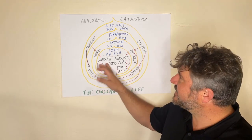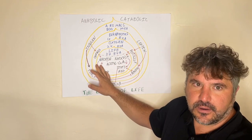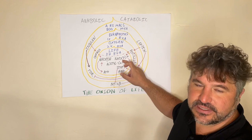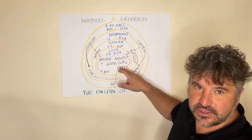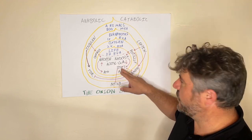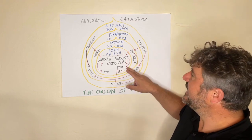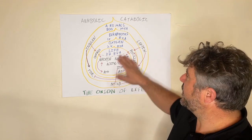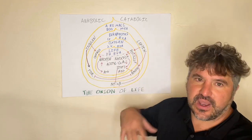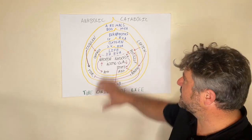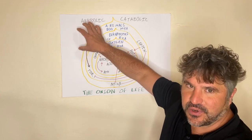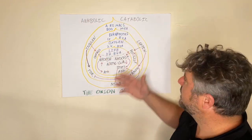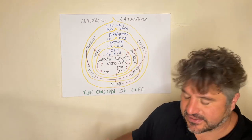Acetylation happens in anabolic mode, and in catabolic mode, deacetylation happens because the sirtuin enzymes — especially SIRT1, the mammalian sirtuin — are activated by NAD+. It requires NAD+ to do its job. So in anabolic mode you have acetylated enzymes, which is the hallmark of anabolic storing mode, while the hallmark of catabolic mode is that your enzymes are not acetylated.